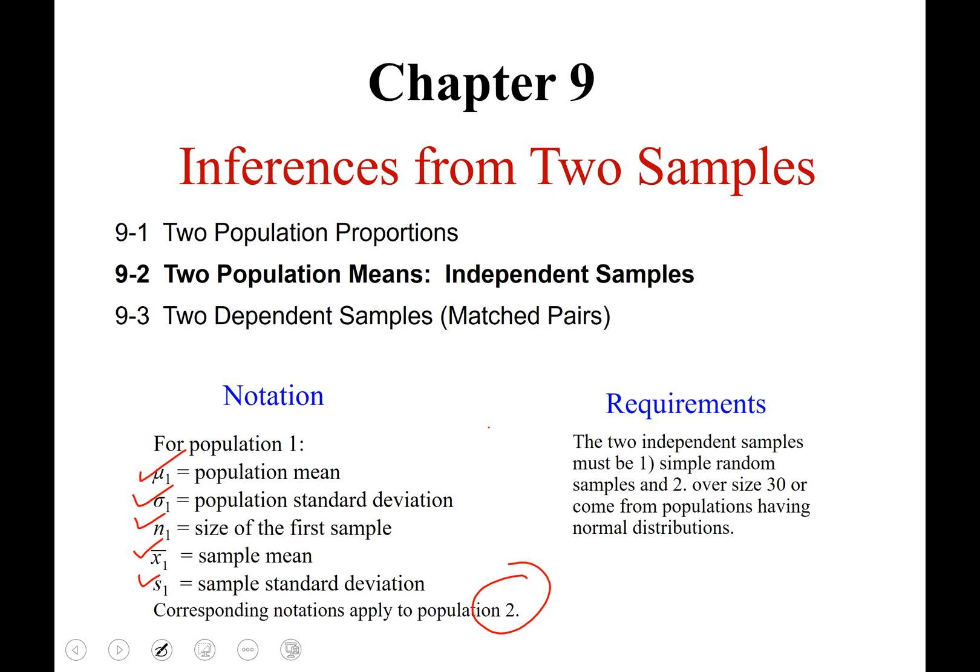Requirements: we need simple random samples, each of size over 30, and coming from a population with normal distribution.